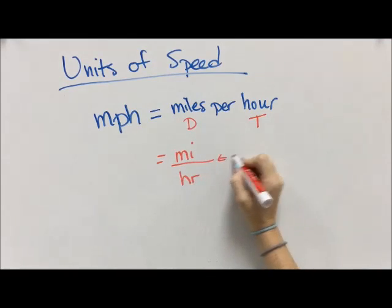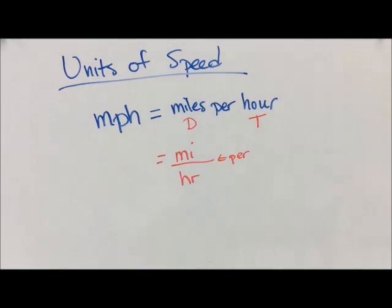So miles per hour can be written this way, where this line, where we have miles over hours, means per. So this is still miles per hour. That's how we would read MI over HR.